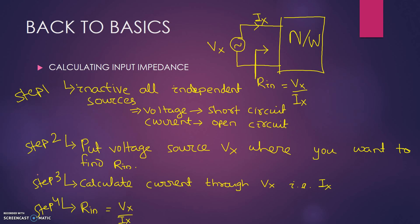Before starting, let's talk about how to calculate the input impedance of any network. As you know, input impedance is V_input divided by I_input. So if we place a voltage source Vx and the circuit draws current Ix through it, then the input resistance is Vx divided by Ix.